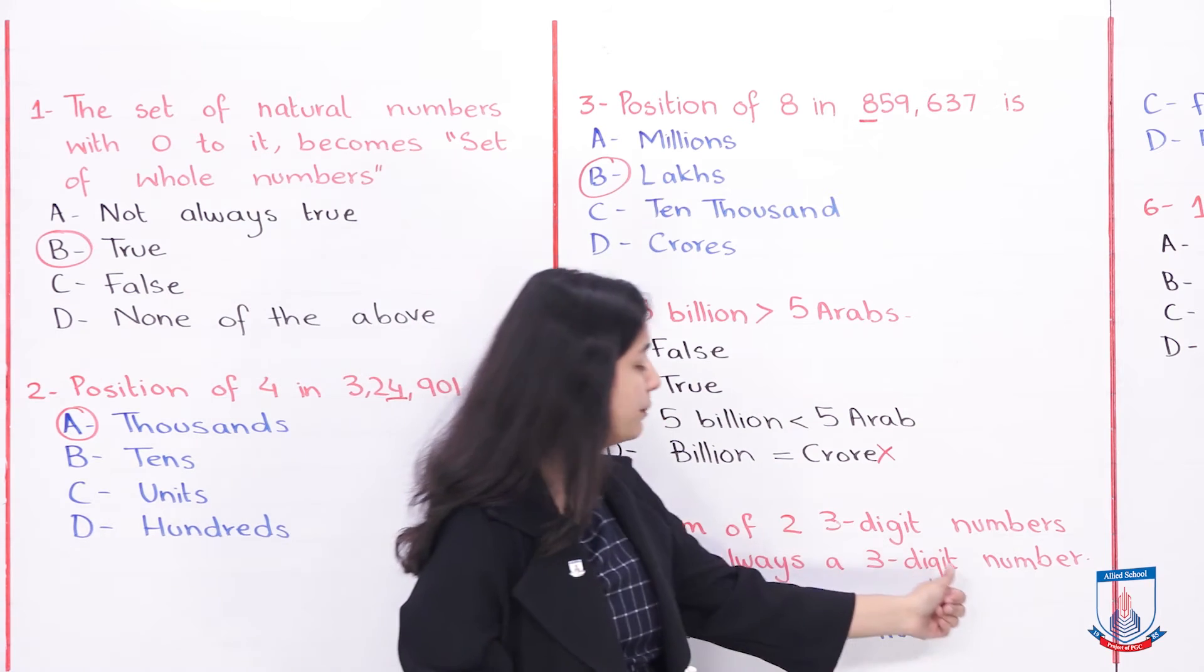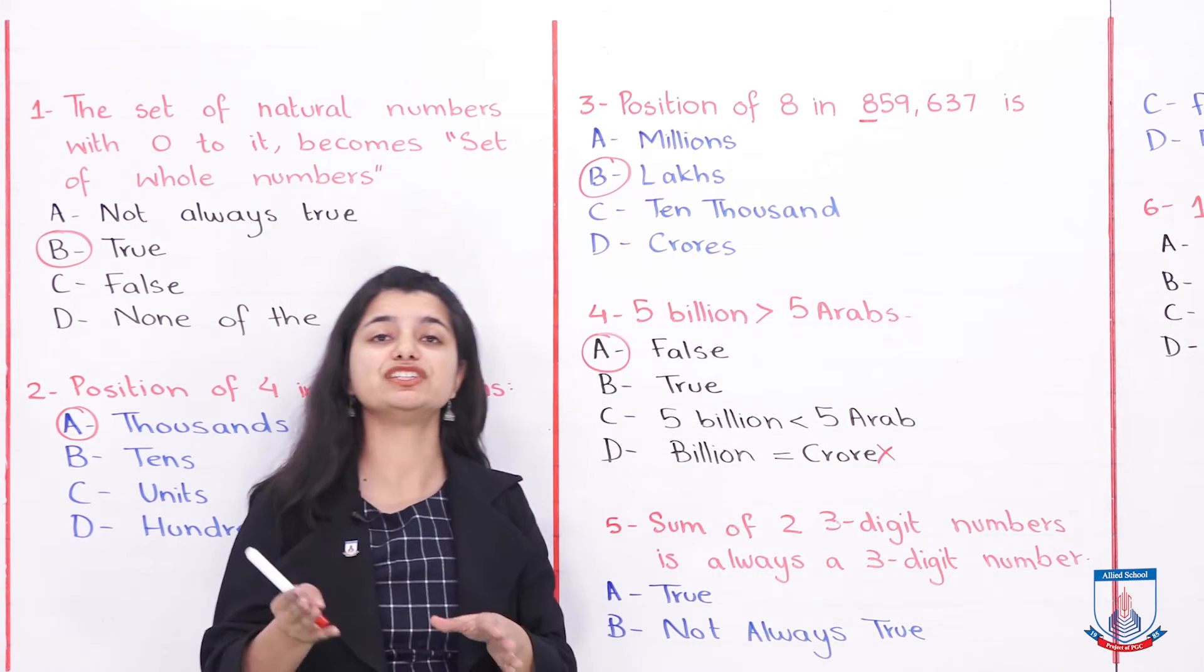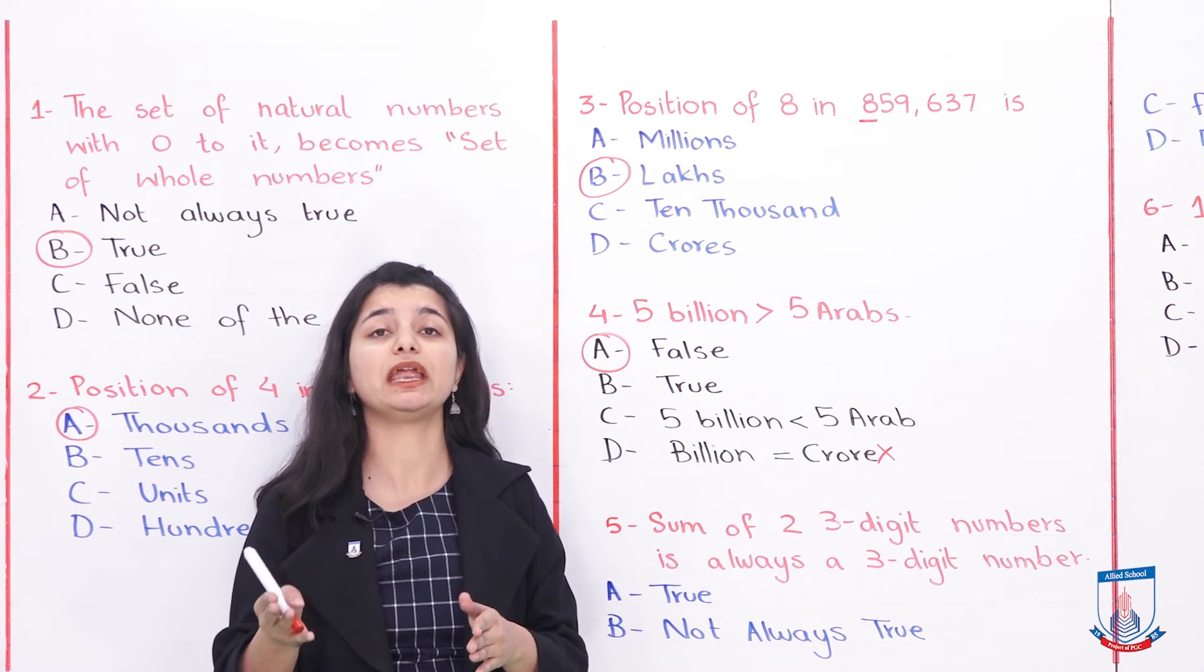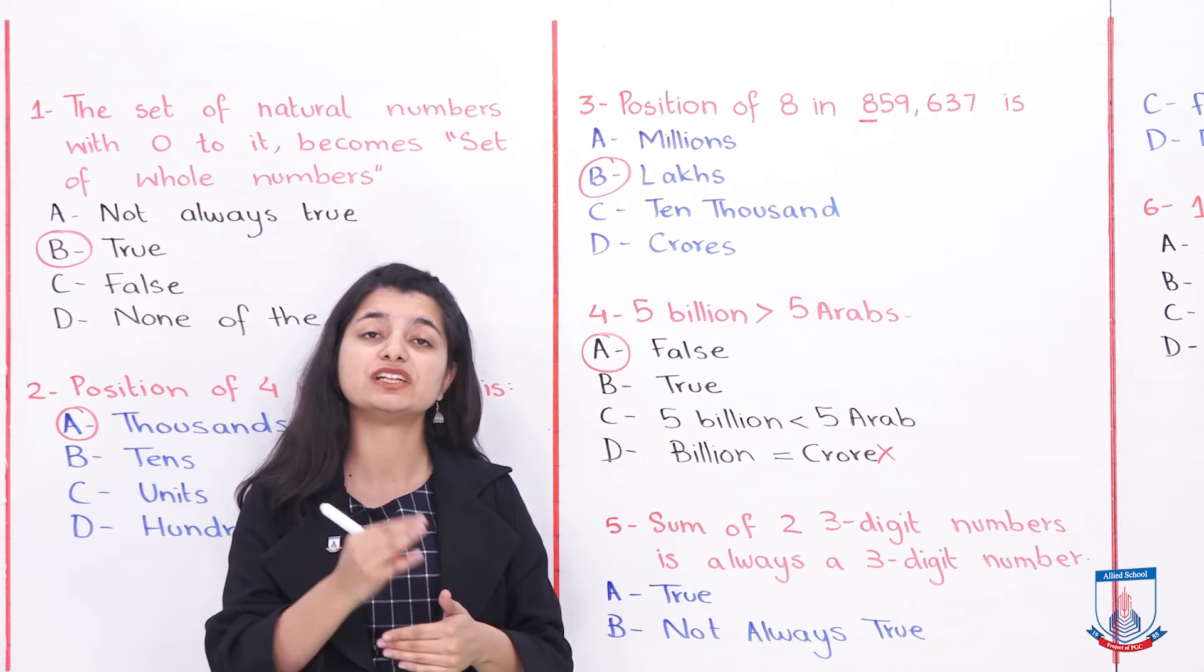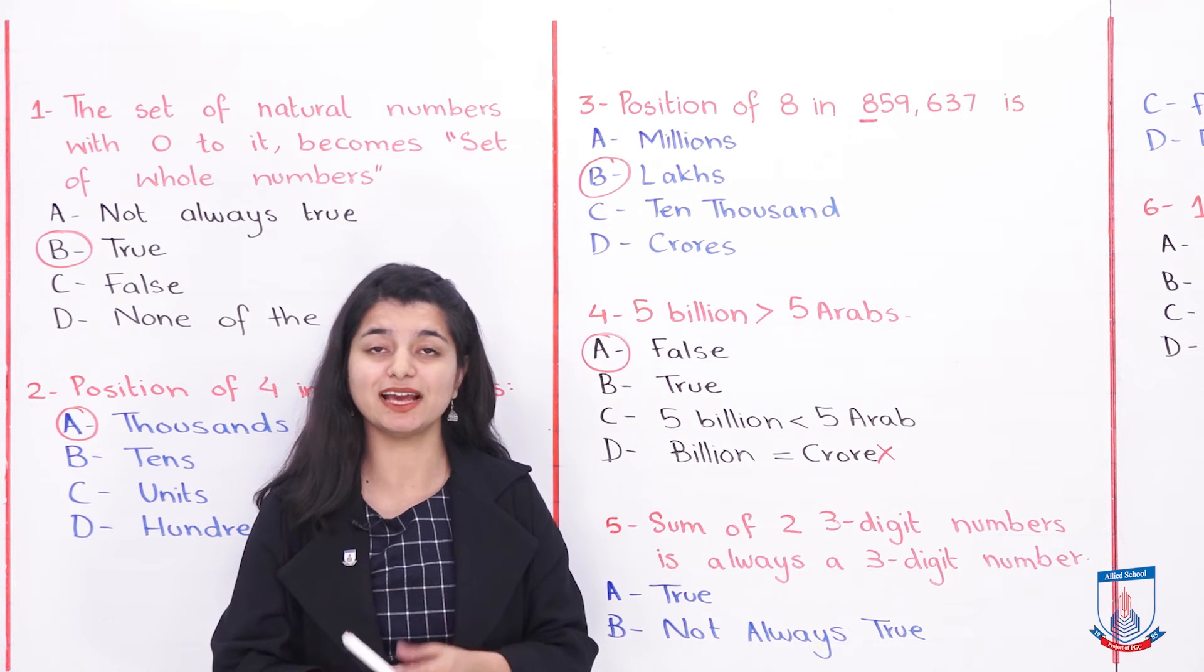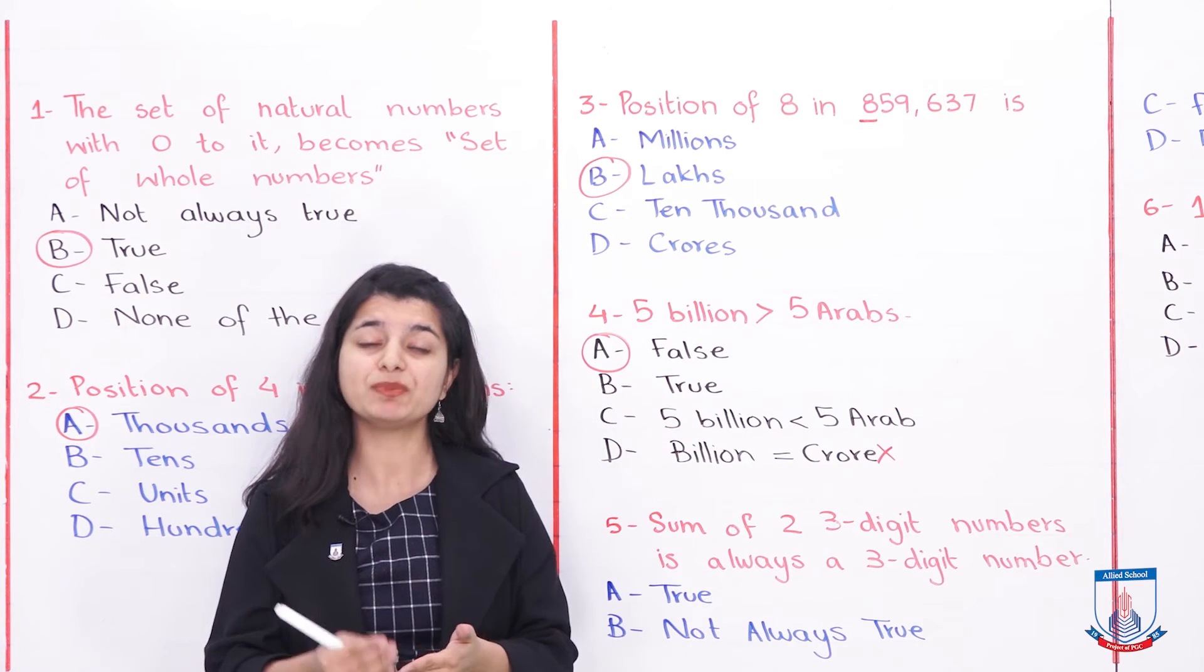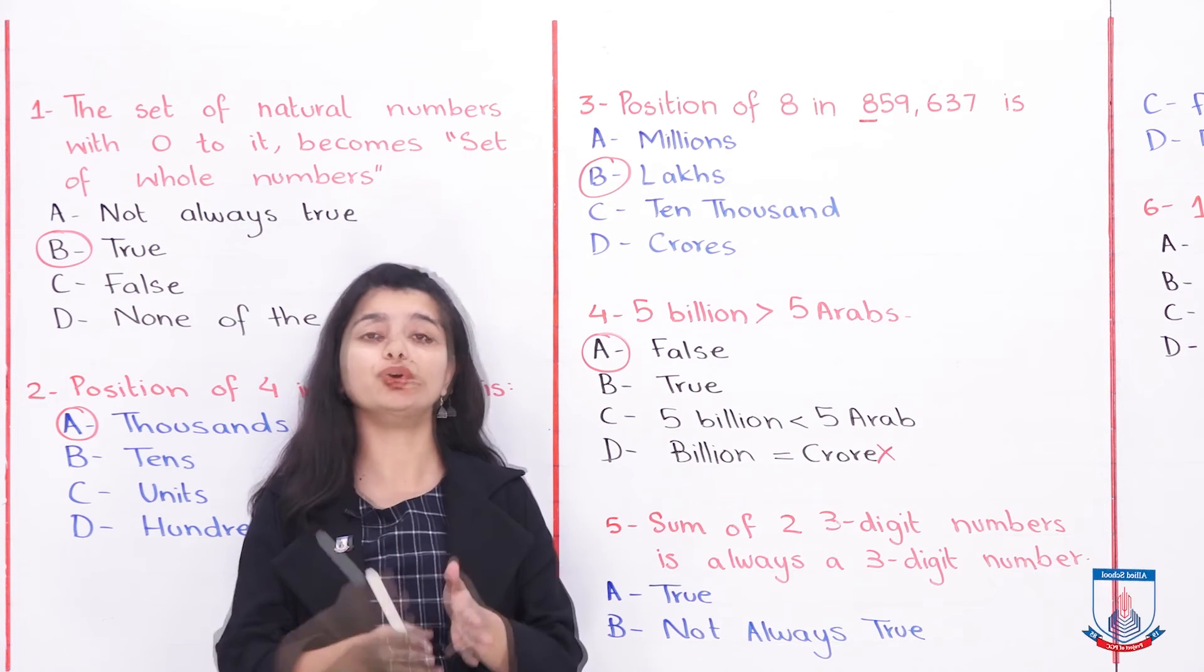Sum of two three-digit numbers is always a three-digit number. When you have any three-digit number, like 124 plus 645, 948 plus 321, which are also three digits, if you add any two numbers, you always have three digits. Is it true? Is it false? Is it not always true? We will see this. If you try yourself, if you use two three-digit numbers, if you use 995 plus 463, then your answer will not come in three digits.